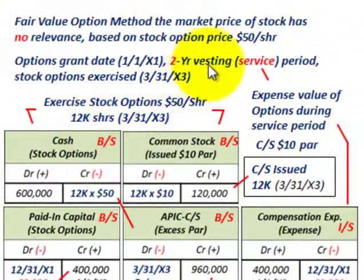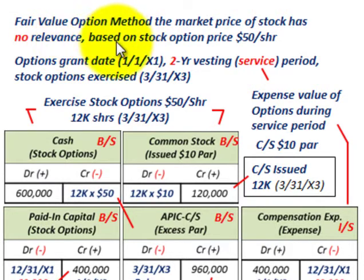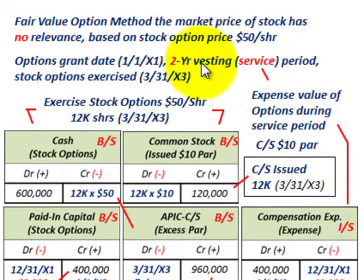We're using the fair value option method, where the market price of the stock has no relevance in our accounting. It certainly affects the executive who's buying the stock, but for accounting purposes it doesn't matter. Our recording of the option will be based on the stock option price of $50 per share set by the company. The options had a grant date of 11/X1 with a two-year vesting service period required before the employee can exercise them. So the stock options will be exercisable on 3/31/X3.